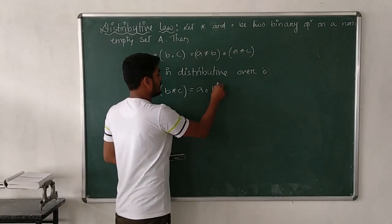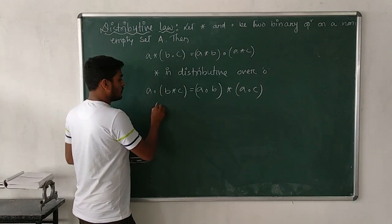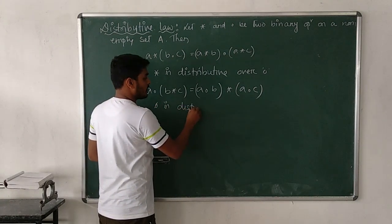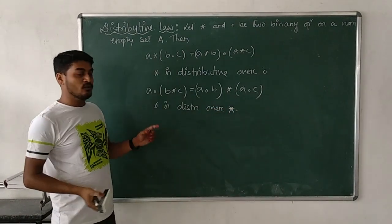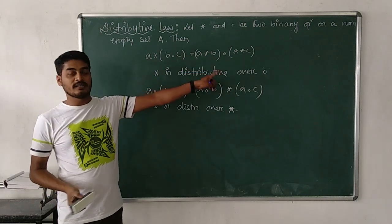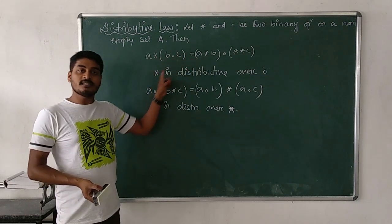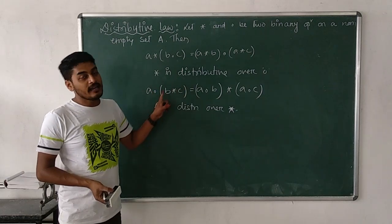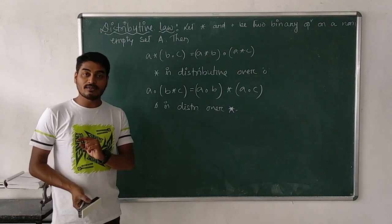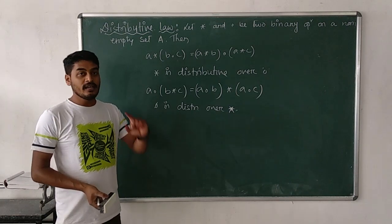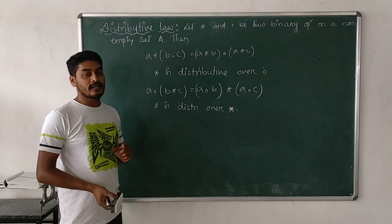Similarly, if we write a • (b ★ c) = (a • b) ★ (a • c), the operation outside the bracket is dot, so dot is distributive over star. The operation inside and outside must be different for distributive property to apply. If both operations are the same, we apply the associative property instead.